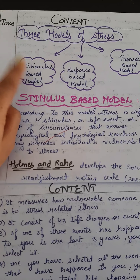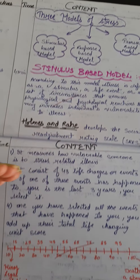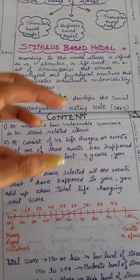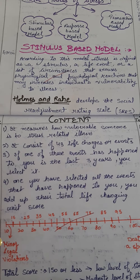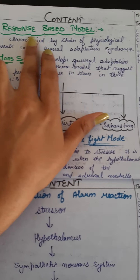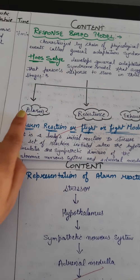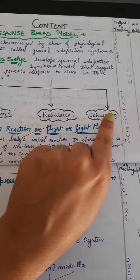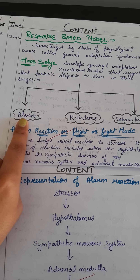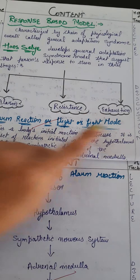Next we come to the response model. First we learned about stimulus, now response. Whenever we have a stimulus — for example, the loss of a loved one — our body gives a response to that stimulus. Our body responds in three ways: first is the alarm response, then resistance, then exhaustion.